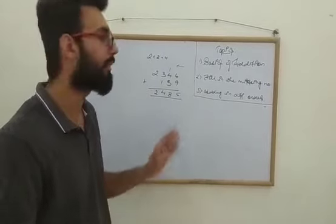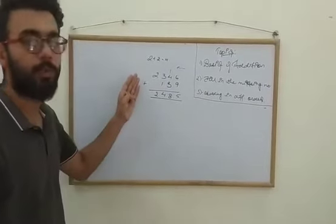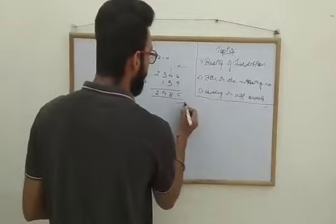So this is the way we do addition. The basics of addition, I think we are very clear. We try to add two numbers and in this way we get the result.